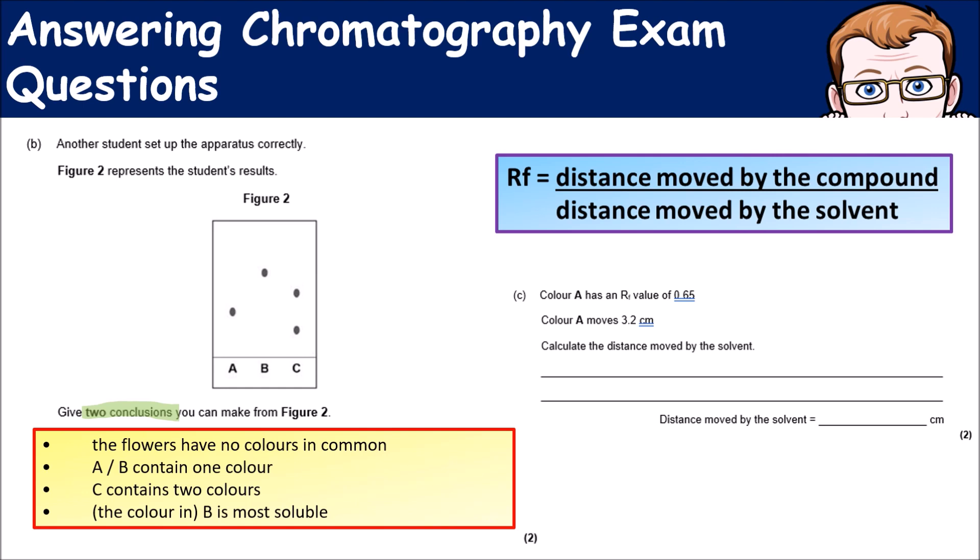There are a range of different things, but some of the more important ones: the flowers have no colors in common because all three look quite different. A and B only contain one color because they only have one spot. C contains two colors, and B is the most soluble because it moved the farthest.